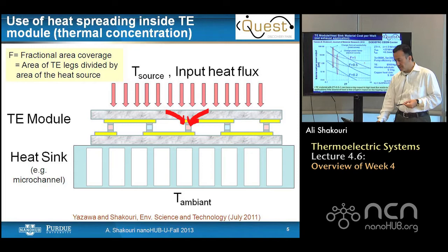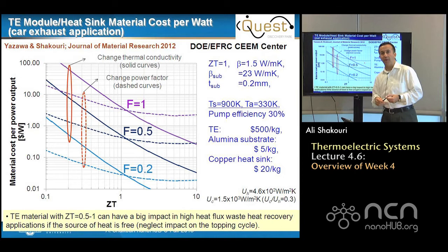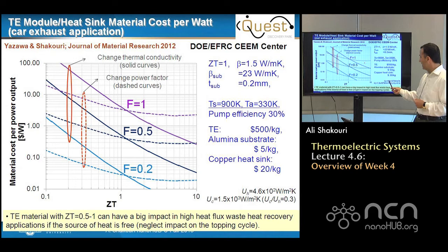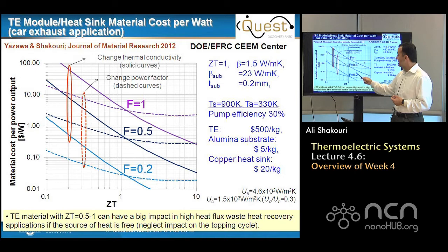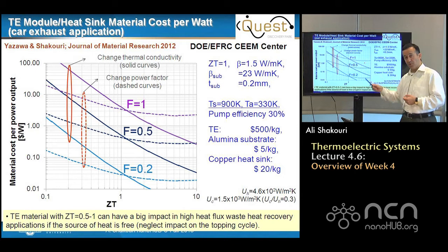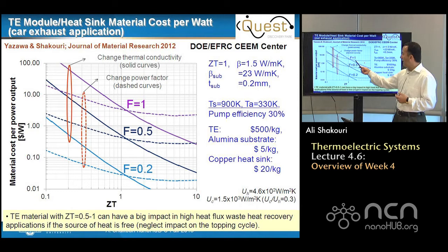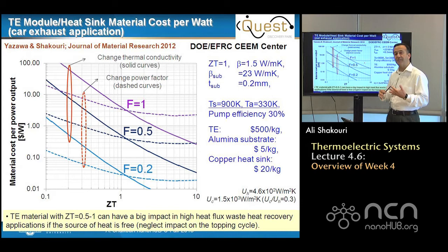If we put numbers for what the material cost would be to generate a given amount of power per watt, for a case of automotive application — even with a thermoelectric material of $500 per kilogram, a state-of-the-art lead telluride-type material — today's cost could be on the order of a couple of dollars per watt. By improving ZT, you can reduce the cost, but improving thermal conductivity is more important than improving the Seebeck factor, because that changes the thickness of material needed to achieve impedance matching — you need thinner and less material. By reducing fractional area coverage and including heat concentration inside the thermoelectric module, you can bring the cost down to a point where the thermoelectric cost essentially doesn't factor in.